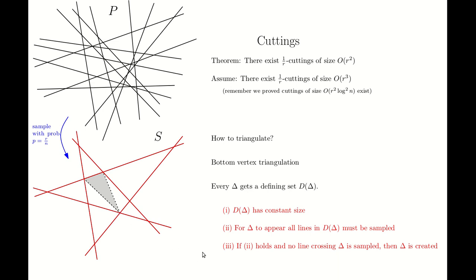To prove the third property, observe that the bottom vertex has a special configuration: if you look at the edges adjacent to the bottom vertex, both edges are going upwards, which is natural because this is the lowest vertex of the cell. But if you look at the other two vertices of the triangle, either both edges are going down, or one is going up and the other is going down. In particular, in every cell there is exactly one vertex with the property that both edges are going upwards inside the cell. So property 3 holds in a bottom vertex triangulation.